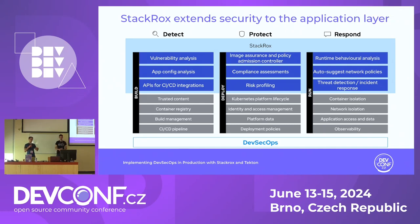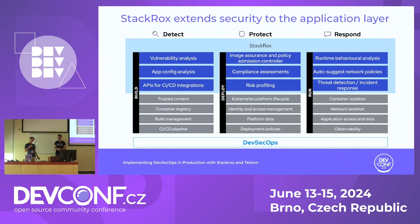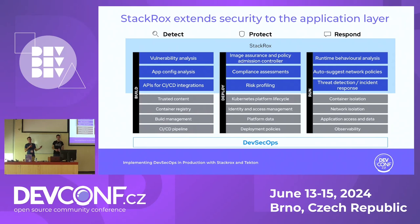In the Protect stage, we ensure that policies are taken into account when we run our software on the cluster. We can do compliance assessments and risk profiling — basically guardrails when applications are deployed. In the Respond section, we talk about situations when something fails while the application is running. There is the possibility to do runtime behavior analysis to detect patterns in containers and, for example, quarantine them if we think something is coming from a bad actor. StackRox can also suggest network policies and we can do threat detection and incident response.